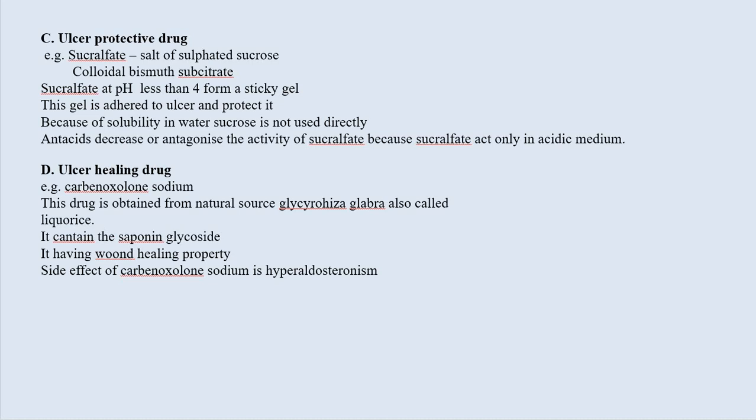The next class of drugs is ulcer protective drugs: sucralfate (a salt of sulfated sucrose) and colloidal bismuth substrate. Sucralfate at a pH less than 4 forms a sticky gel that adheres to the ulcer and protects it. Antacids antagonize the activity of sucralfate because sucralfate acts only in acidic medium. Ulcer healing drugs include carbenoxolone sodium, obtained from the natural source Glycyrrhiza glabra (liquorice). It contains saponin glycoside and has wound healing properties. A side effect of carbenoxolone sodium is hyperaldosteronism.